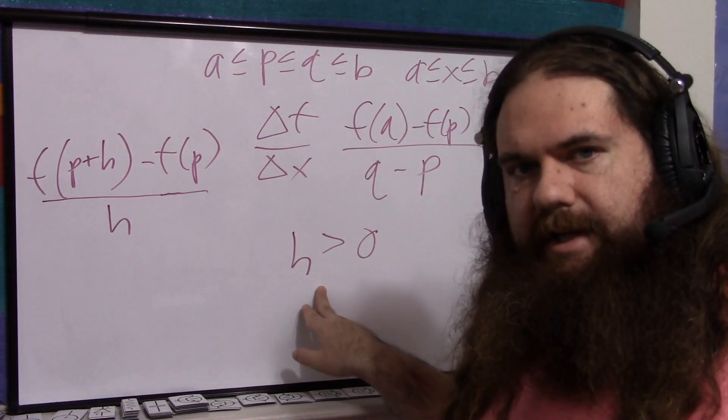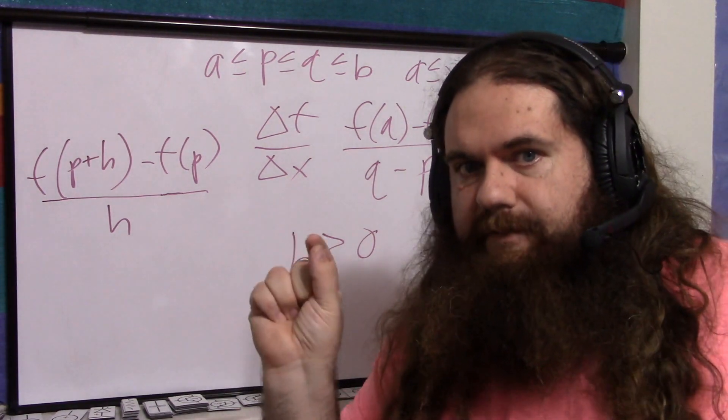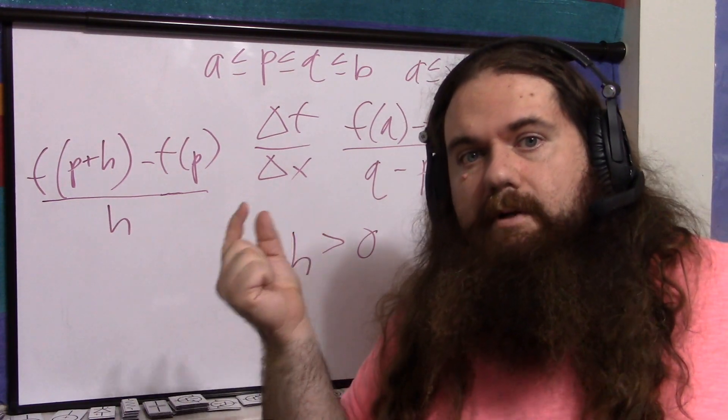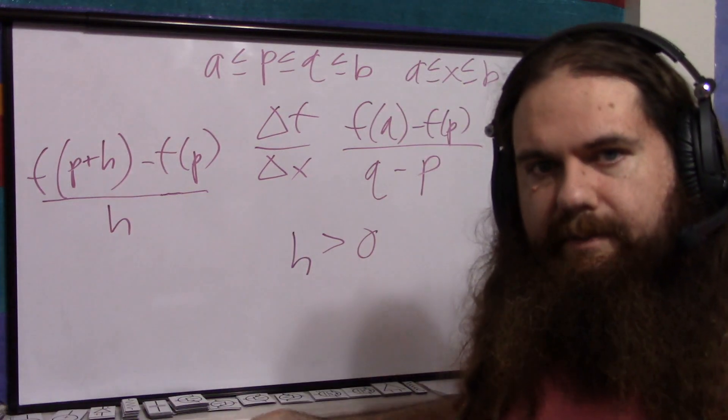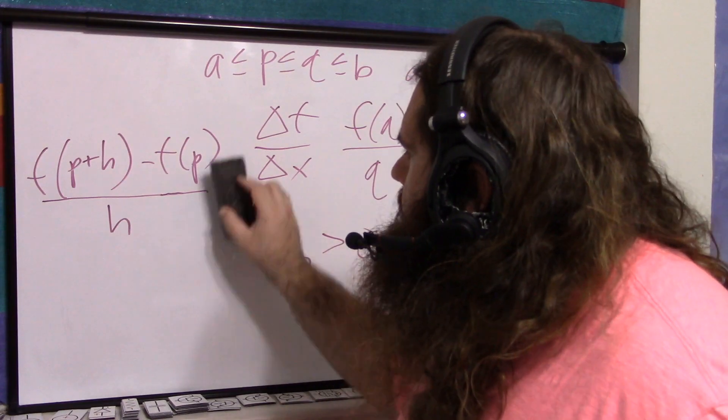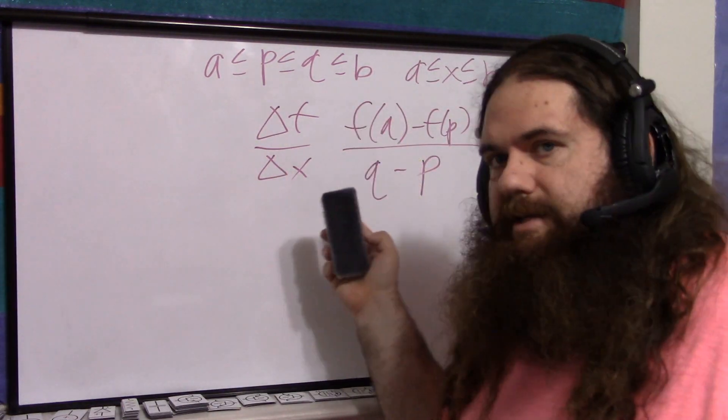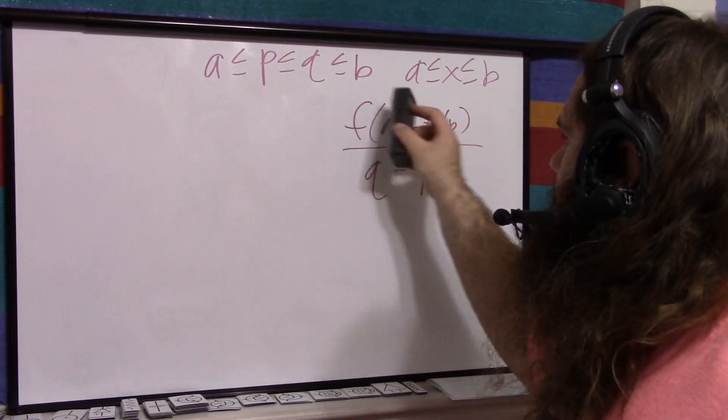But for right now, just pretend h is always greater than zero. It's never zero, because then you'd be dividing by zero. You can't do that. But it's greater than zero. It's as small as you want. But there's a better mathematical form. Nice and simple. So let's leave this for later, when we do limits, because this version right here is a little more clear to look at. Delta f over delta x. This is the intuitive version.